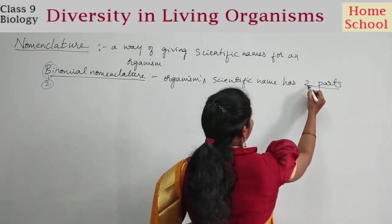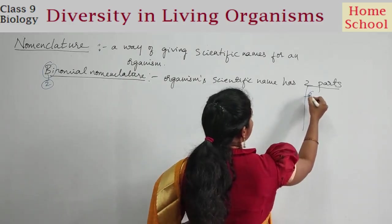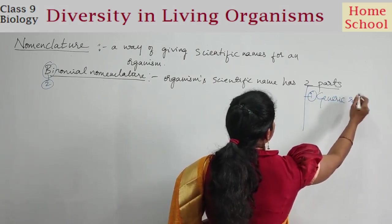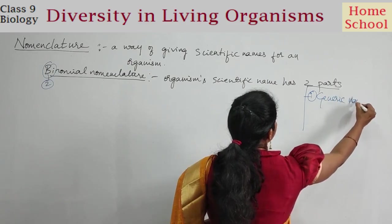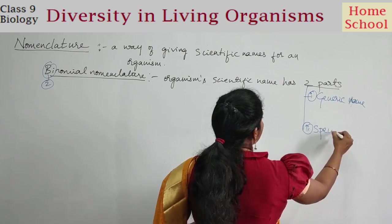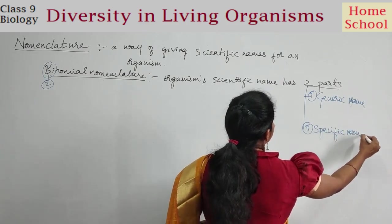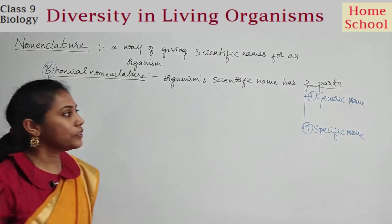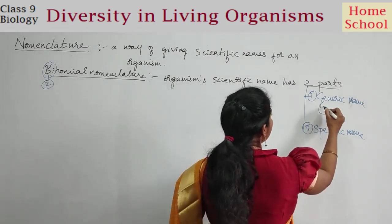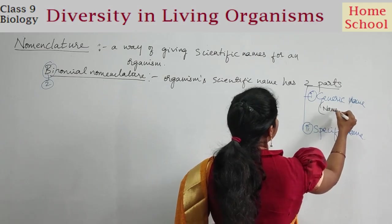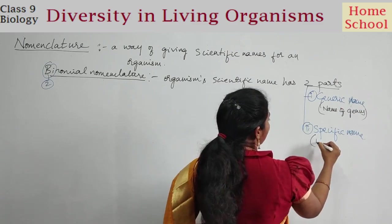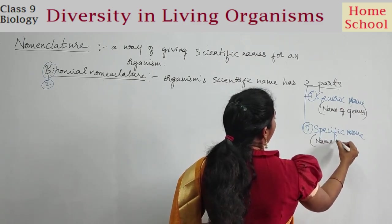The first part is called the generic name, and the second part is called the specific name. The generic name is nothing but the name of the genus. The specific name is nothing but the name of the species.